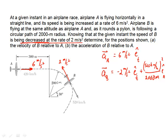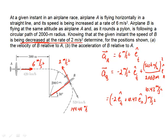Converting 520 km/h gives 144 m/s. Squaring and dividing by 2000 m gives 10.43 m/s². So the acceleration of plane B is −2 m/s² in the tangential direction plus 10.43 m/s² in the normal direction, with the normal component directed toward the center of curvature.